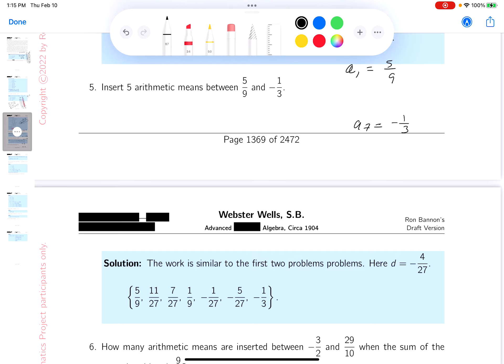So what I'm going to do, I'm going to try to find out what d is, so I get minus one-third equals A1, which is five-ninths, plus, that's a seven, so n minus one would be six times d, right?